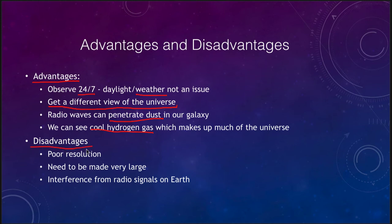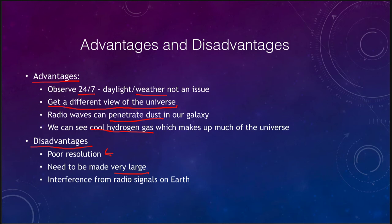Some disadvantages of radio telescopes include poor resolution. The resolving power of a telescope depends on the size of the telescope and also the wavelength — if you're looking at a very long wavelength, the resolution gets worse. Radio wavelengths can be in the centimeters range, meaning their resolution is many times worse than that of optical telescopes. Therefore, we need to make very large telescopes for radio astronomy — a small radio telescope might be in the 20 to 30 meter range, comparable to the very largest optical telescopes being planned today. We can also get interference from radio signals being transmitted on Earth, similar to light pollution for optical telescopes.